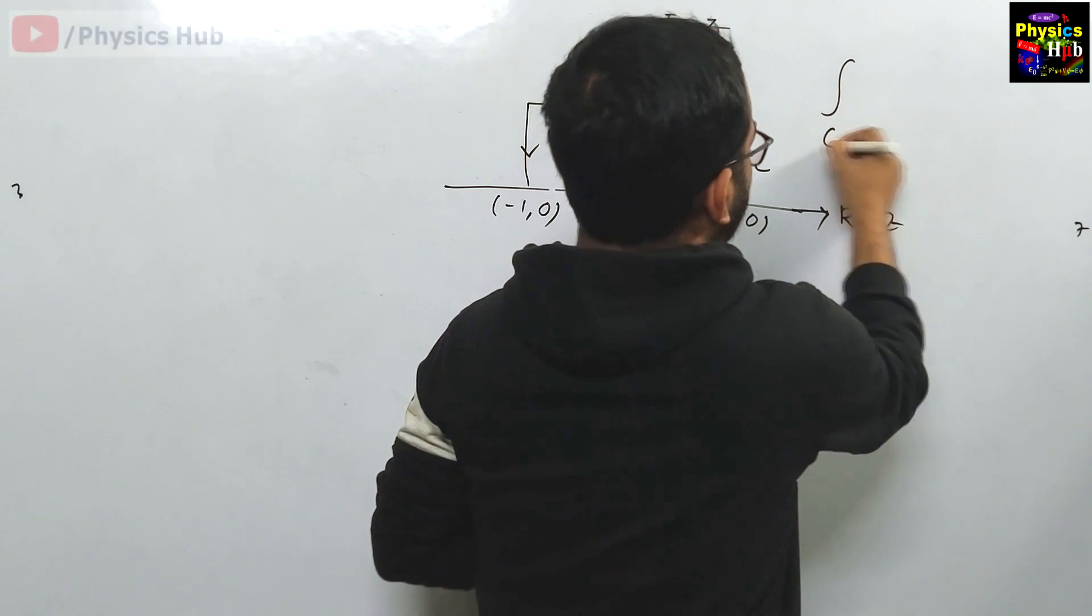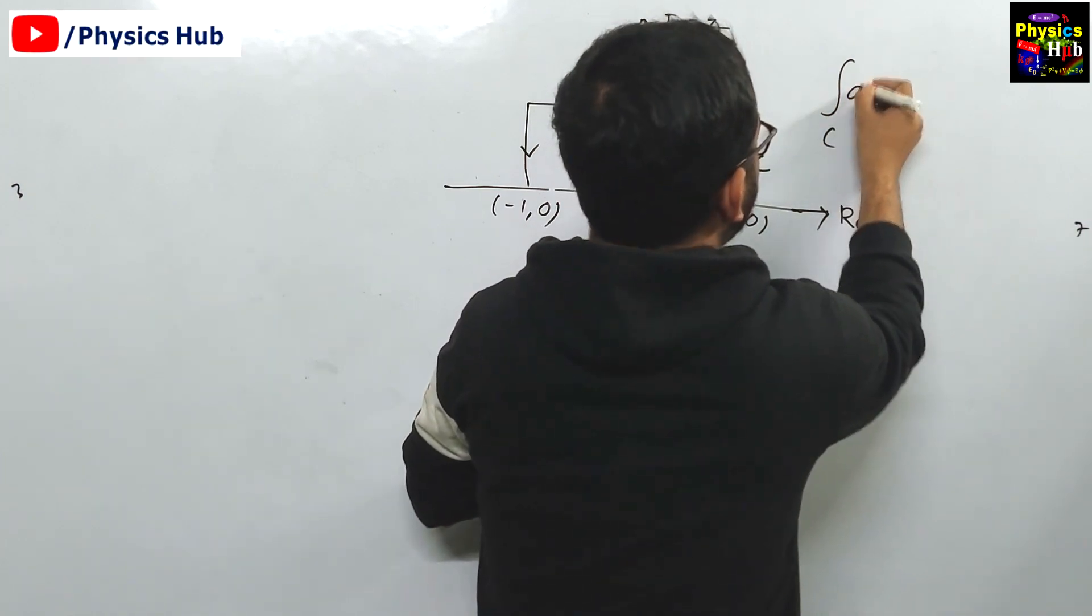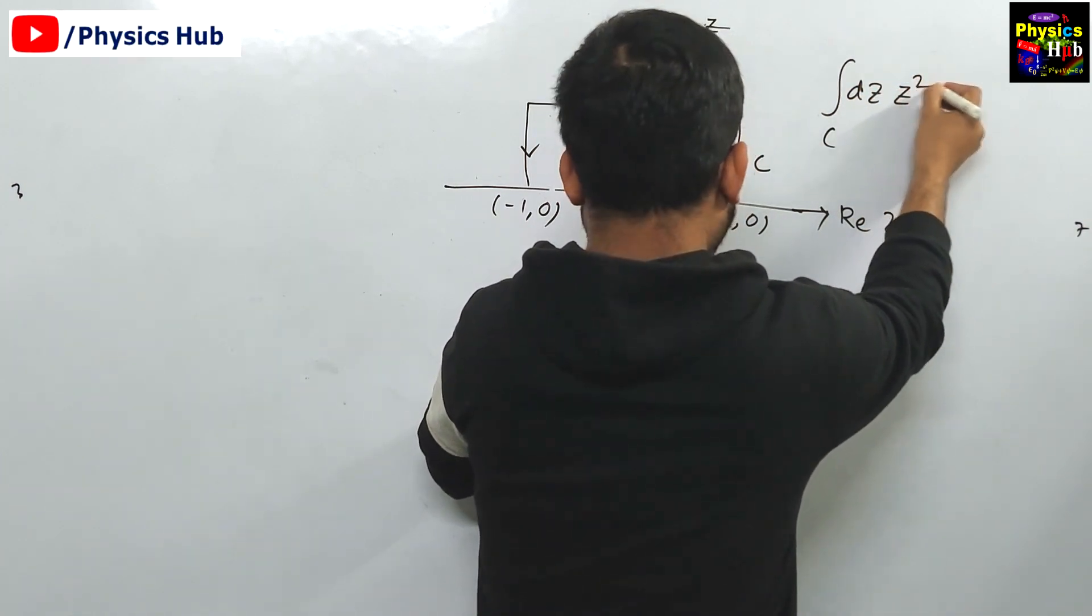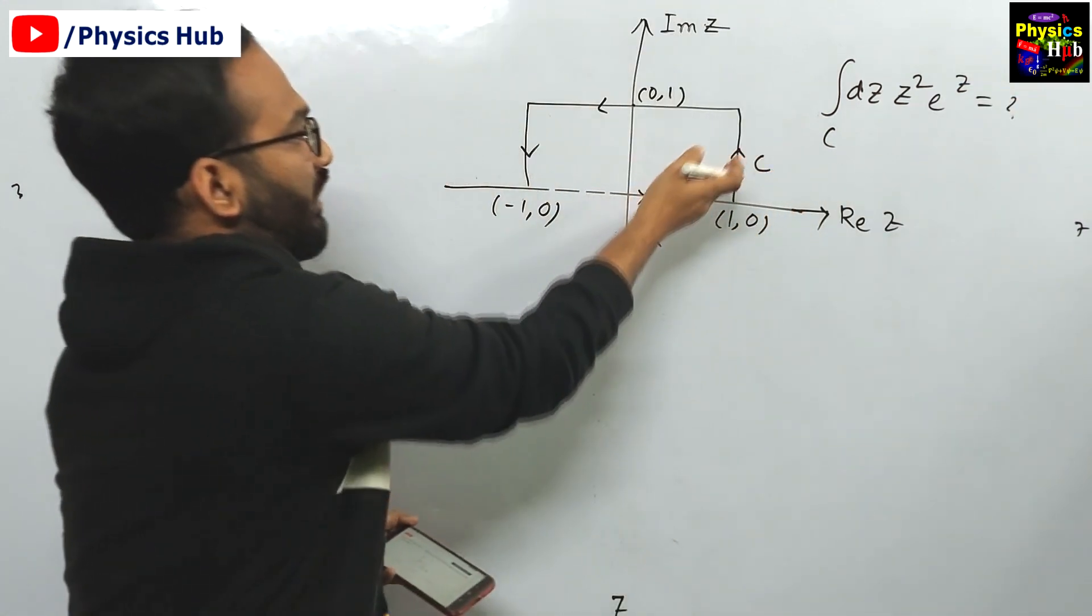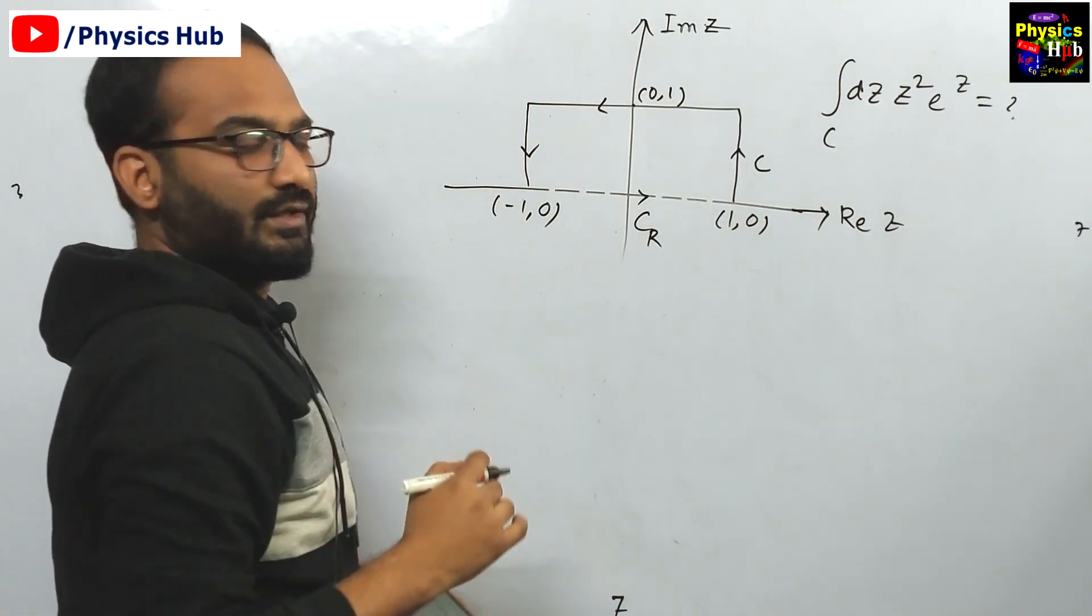We have to find out this integration over C, dz z² e^z, means only for the above portion we have to calculate.